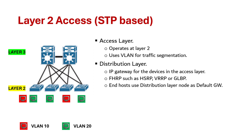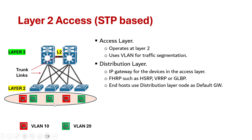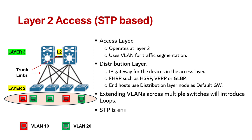We group access layer end points logically using VLANs, and the VLANs are spread across multiple switches. For example, the red VLAN — VLAN 10 — is present in switches one and three, and the green VLAN is in switches one, two, and four. For this communication, VLAN-based trunks are used to extend the subnets from the distribution switches down to the access layer and also between the distribution switches. When you extend VLANs across multiple switches, you encounter a big challenge: layer 2 loops.